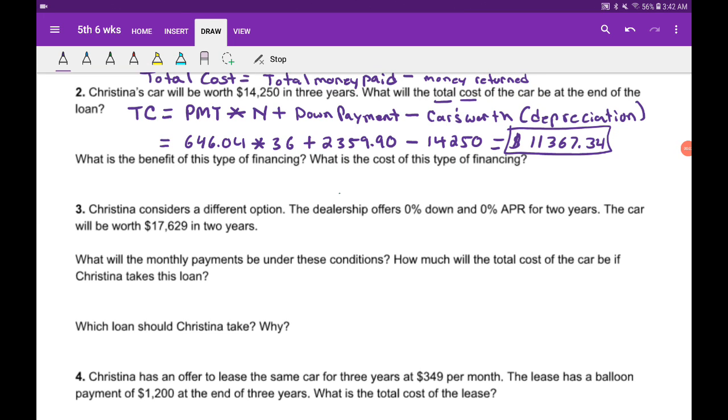Question three: Christina considers a different option. The dealership offers 0% down and 0% APR for two years. The car will be worth $17,629 in two years, so a little more than three years which makes sense. What will be the monthly payments under these conditions? How much will the total cost of the car be if Christina takes this loan?